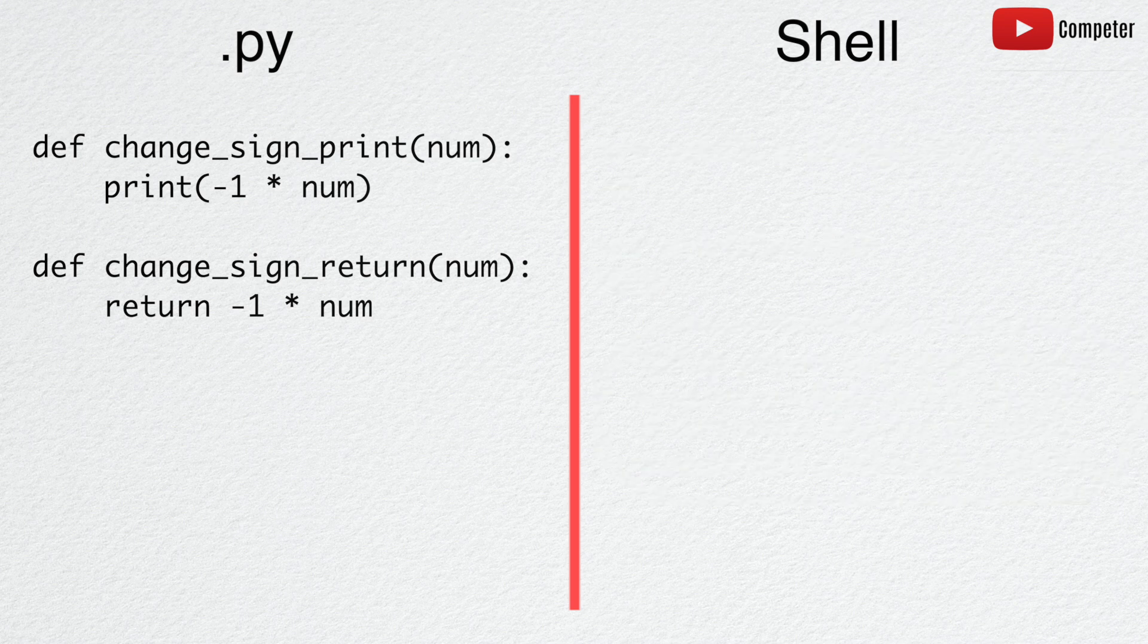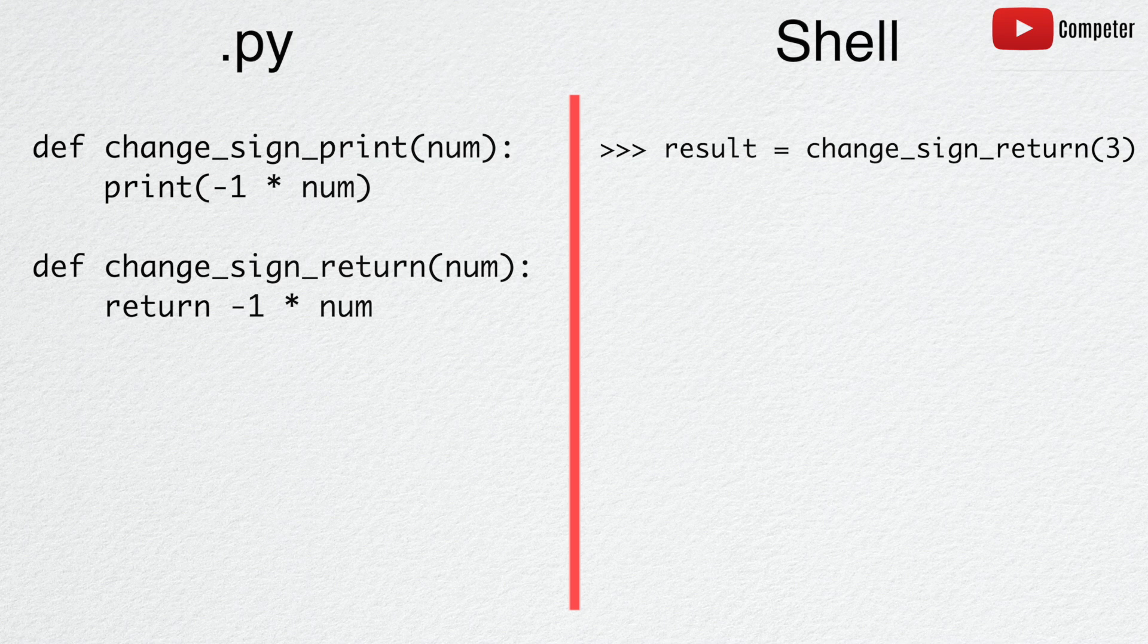Now, when we assign the function change_sign_return to a variable, we see that nothing is printed to the shell, because there is no print function inside change_sign_return.